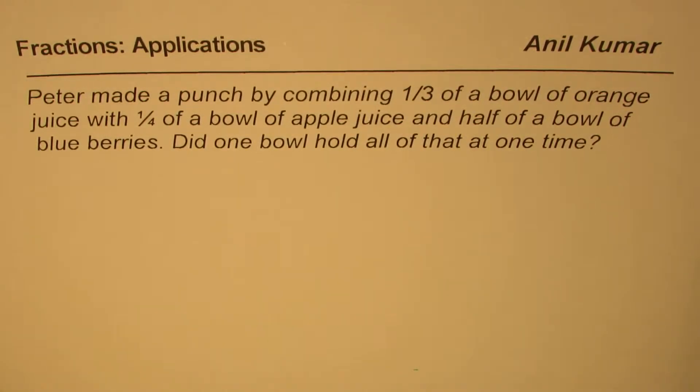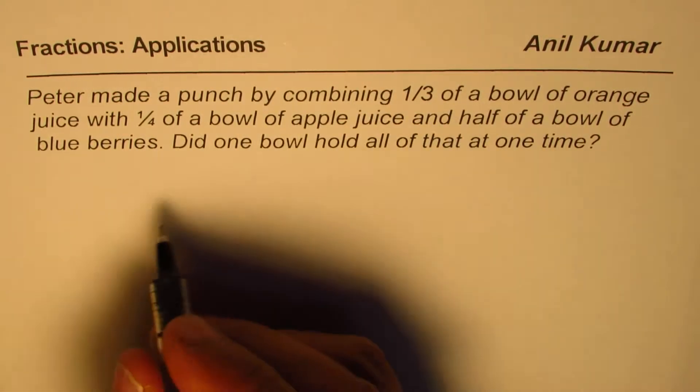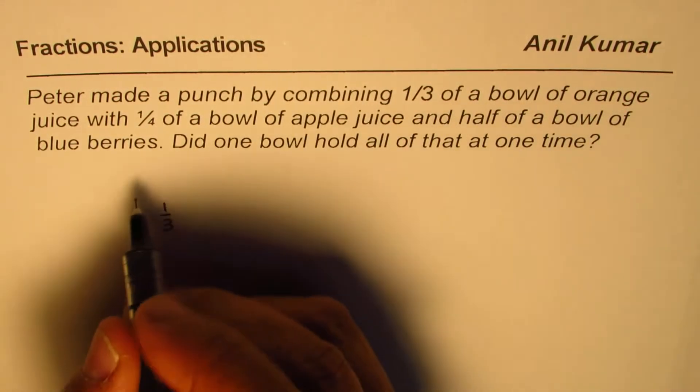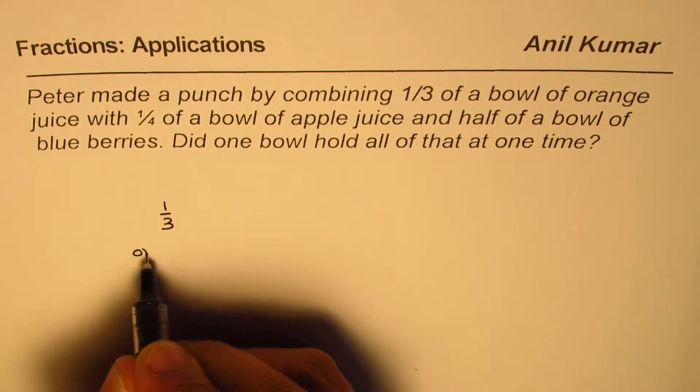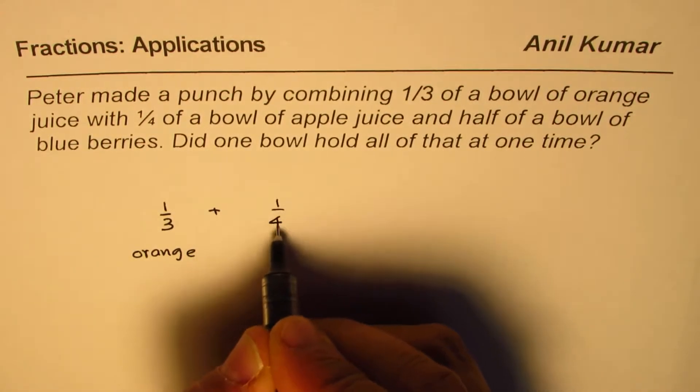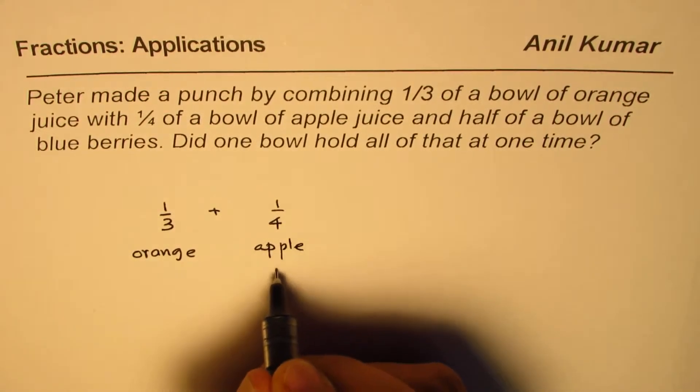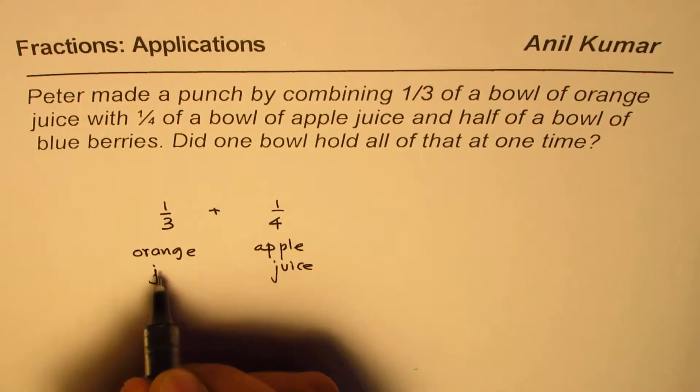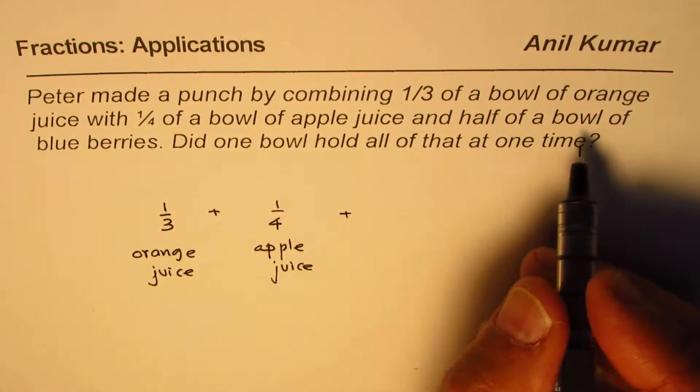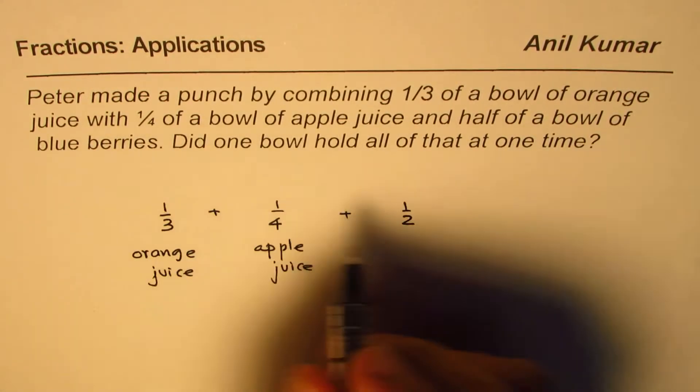That's the question for you. Let's figure it out. So what do we have here? We have three kinds of things. So it is 1/3 of orange juice plus 1/4 of apple juice, all our juices, liquids, and half of the bowl of berries, blueberries.